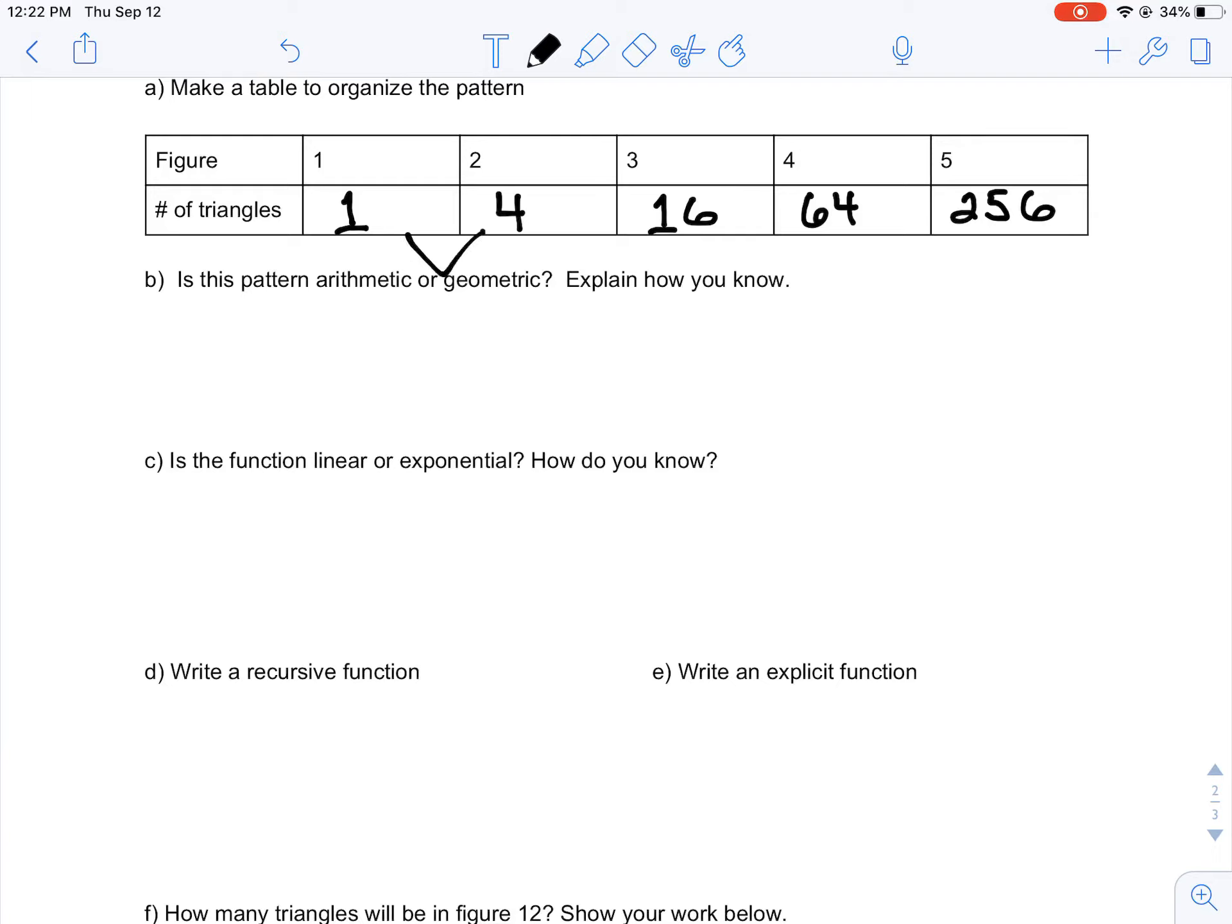So we get from 1 to 4, I'm multiplying by 4. 4 to 16 times 4. 16 to 64 times 4.